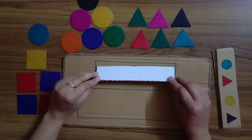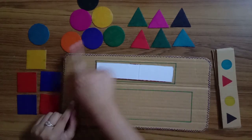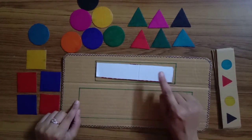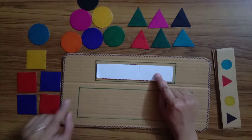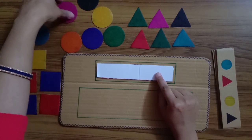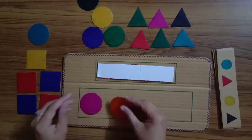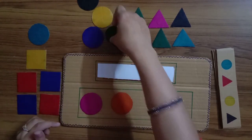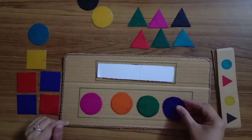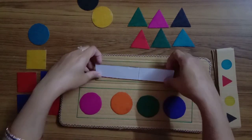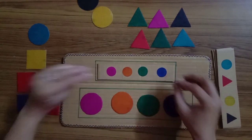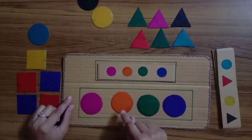Flip it back and ask the child to put all the shapes here that he has seen in this pattern card. So our first was pink circle, put it here, then orange circle, then a green circle, and then a blue circle. Then flip this card over again and here you go: pink circle, orange circle, green circle, and a blue circle.